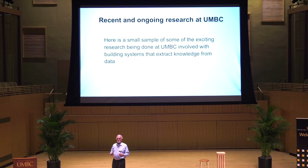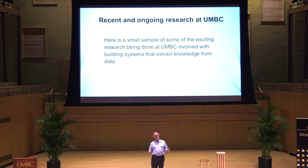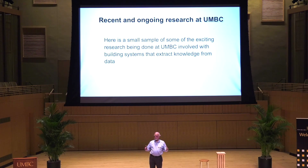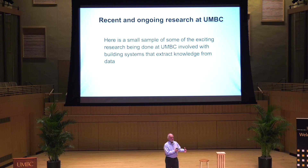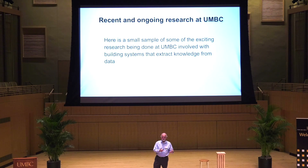What I'll talk about are some examples — a small sampling of recent exciting research being done by UMBC faculty and students — with the general theme of analyzing some data, whether it's text, videos, or some other kind of data, and producing a knowledge graph which is then easy for an AI system to deal with. That AI system no longer needs to look at the original pictures or text and think long and hard about what they might mean.